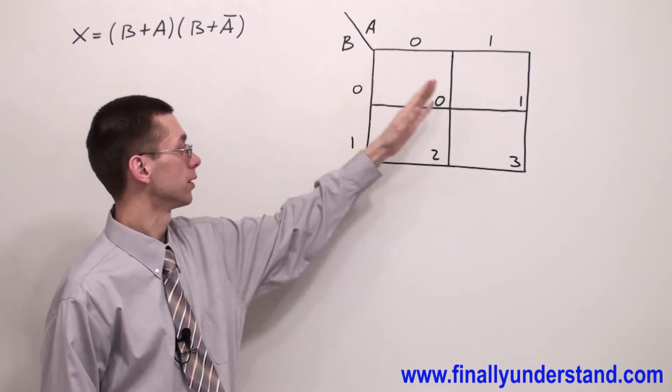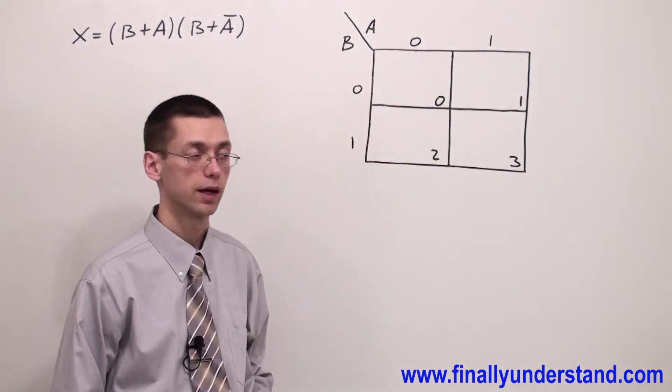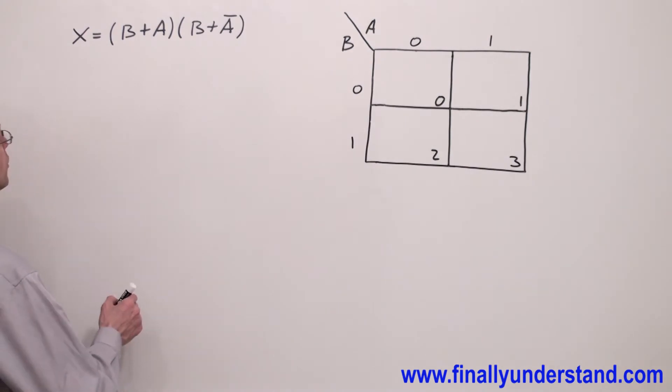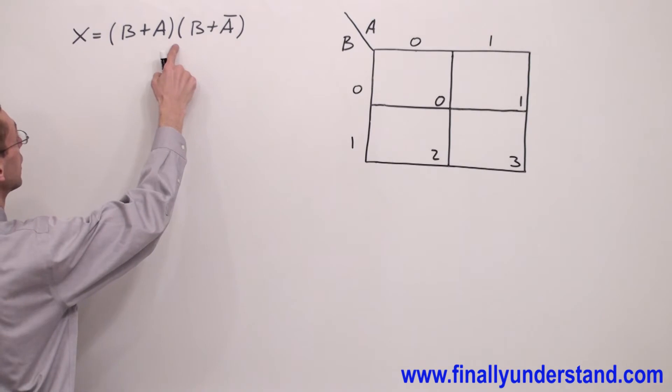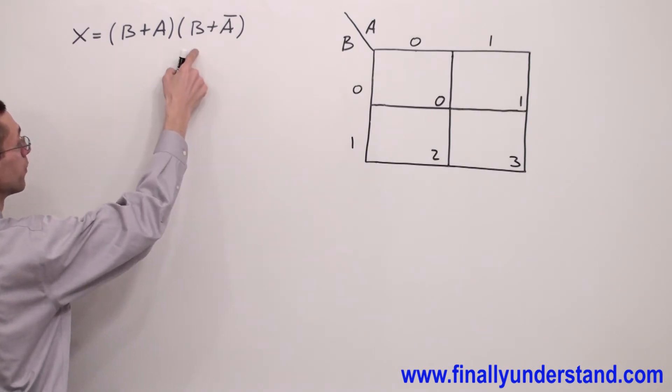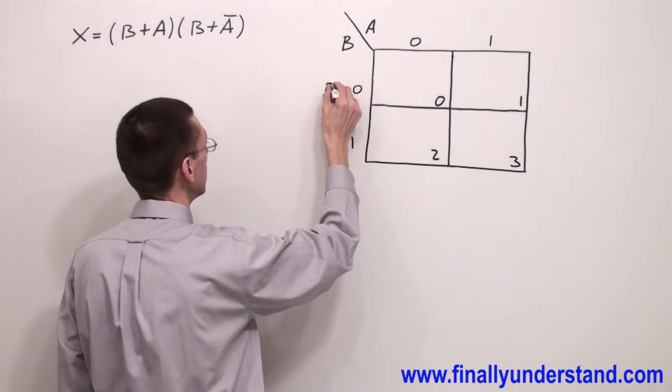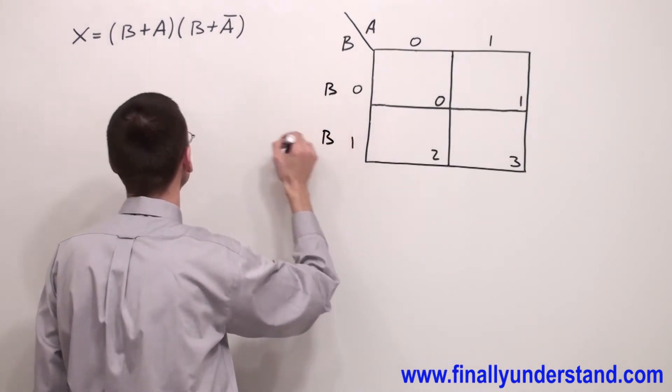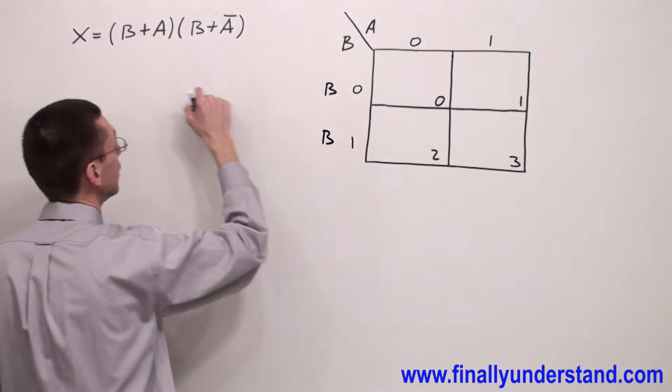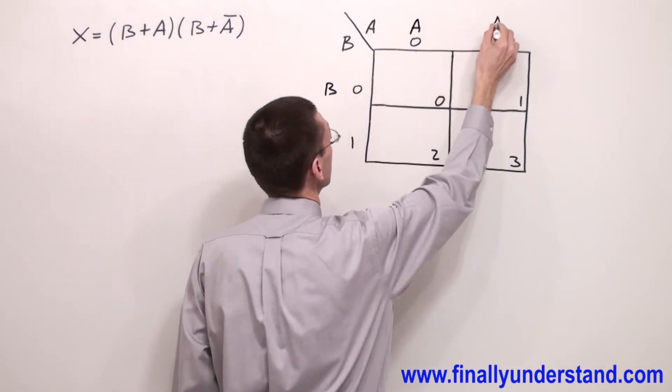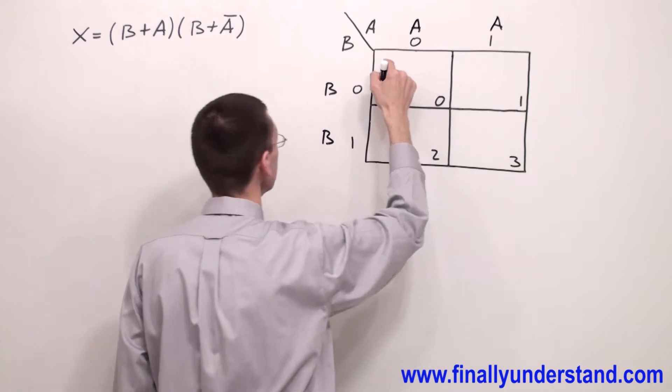This is the standard Karnaugh map and if you want to prepare this for simplifying POS product of the sums, you're supposed to write B because B is my most significant bit and A at the top because A is the least significant bit.